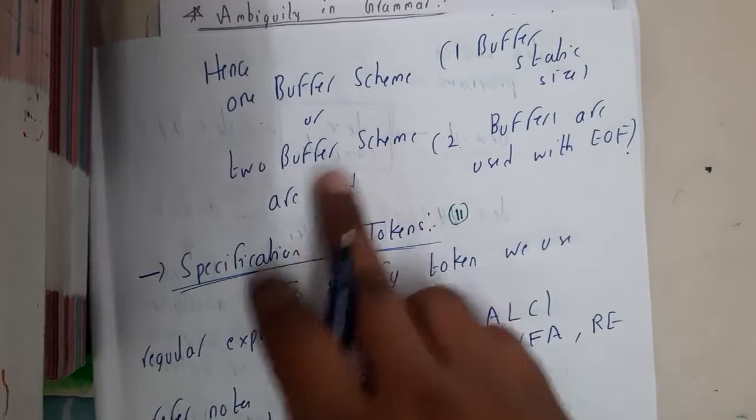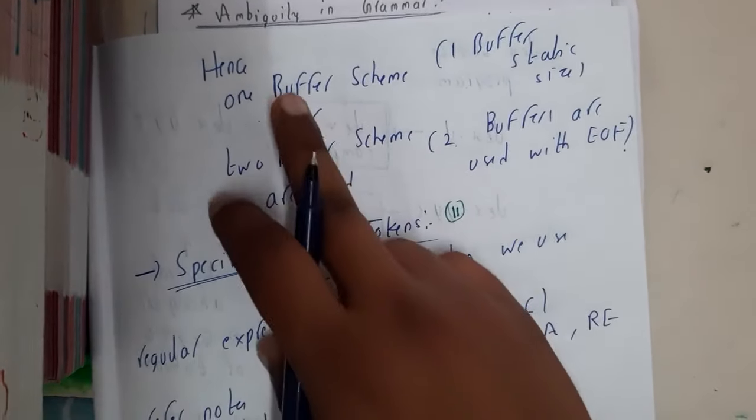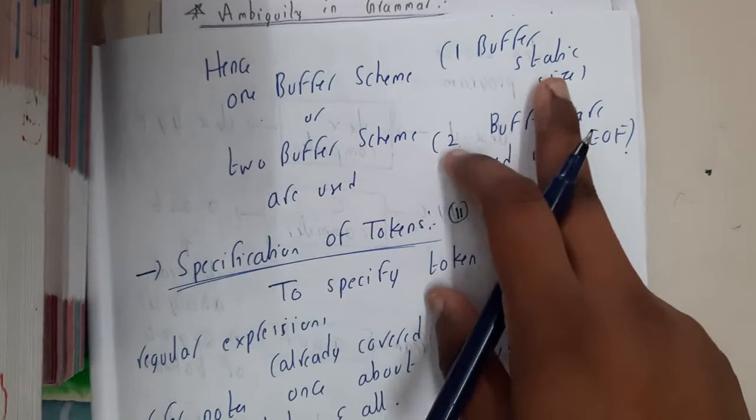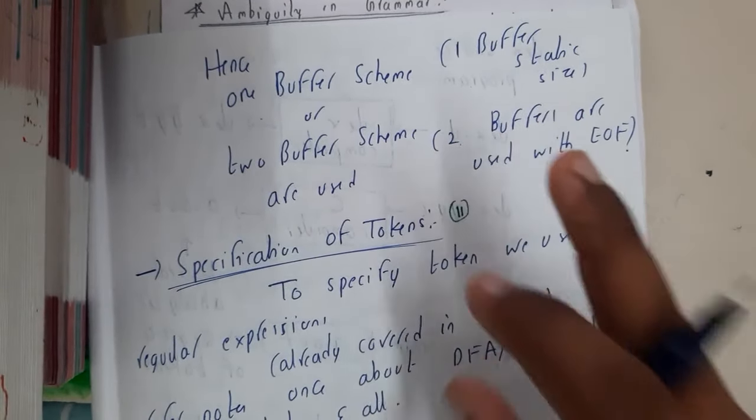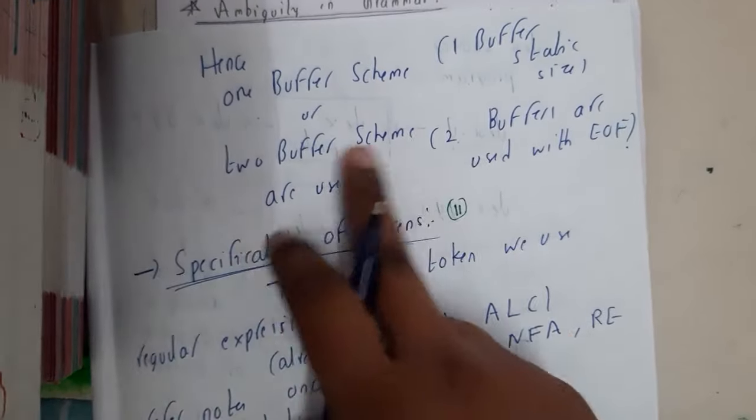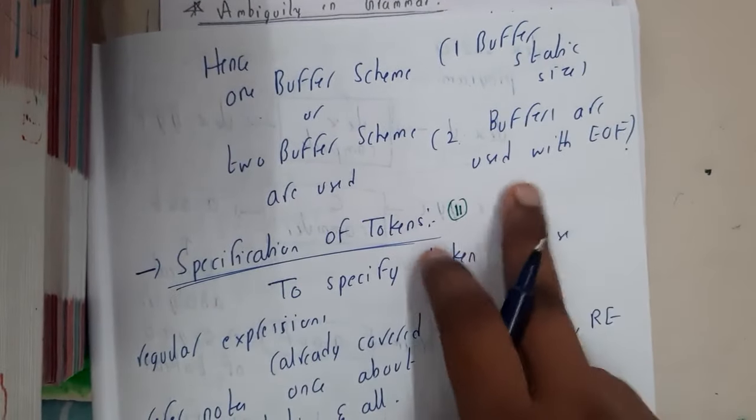Hence, the most commonly used are one buffer scheme and two buffer scheme. One buffer scheme has static size. The other is two buffer scheme using EOF.